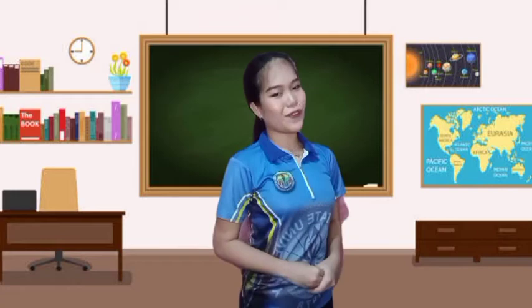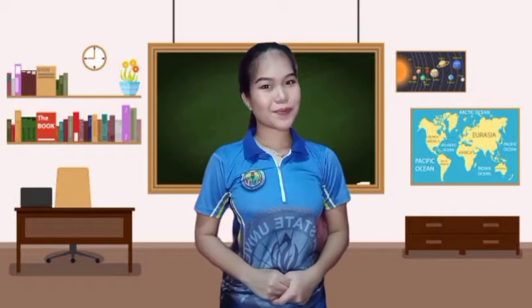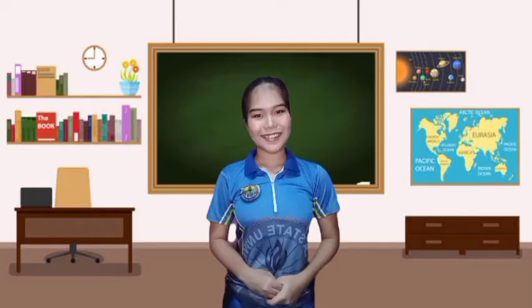Very good class. Now let's define the meaning of individual sport. Individual sport is a sport in which participants compete as individuals. Here are some examples of individual sports: we have badminton, bowling, boxing, cycling, running, swimming, and many more individual sports played in the Olympics.